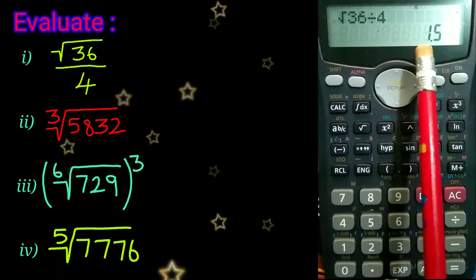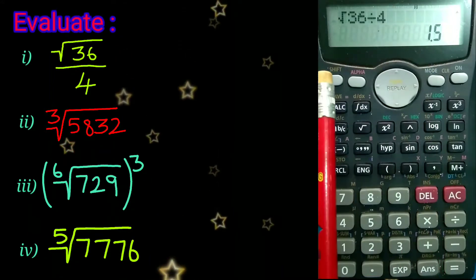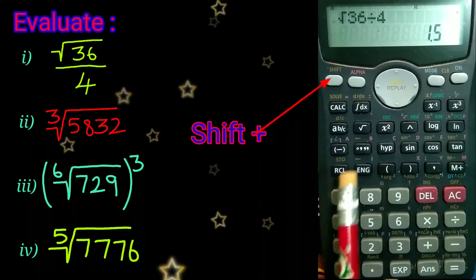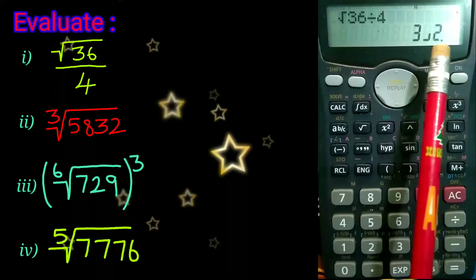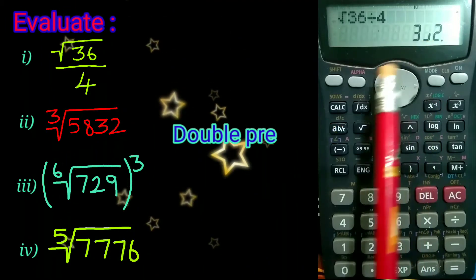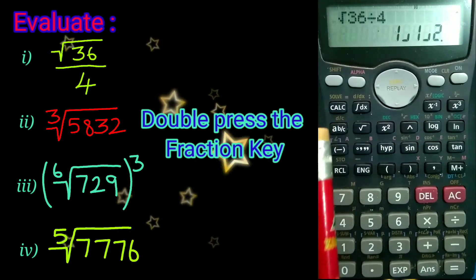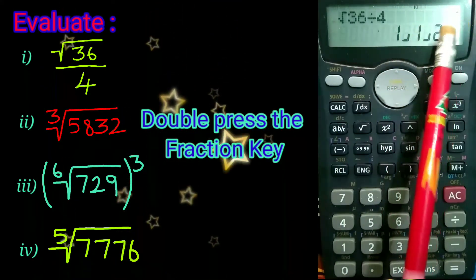It is a decimal value. Let us convert this decimal value to fraction by pressing the shift key followed by the fraction key. We have 3 over 2. For mixed fraction, press the fraction key twice. We have 1 and 1 over 2.